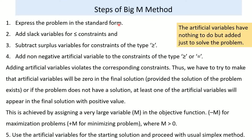Let's now see the steps of the Big M method. The first step is to express the problem in standard form — changing inequalities to equalities. We add slack variables for less-than-or-equal-to constraints, and subtract surplus variables for greater-than-or-equal-to constraints. The fourth step is to add non-negative artificial variables to constraints of the type greater-than-or-equal-to and equality.